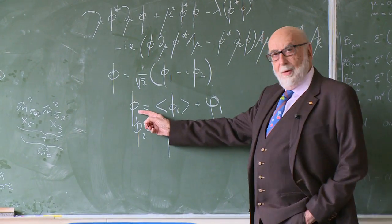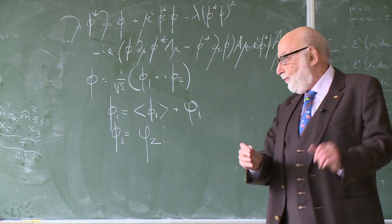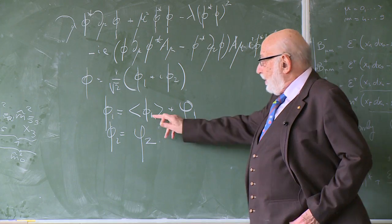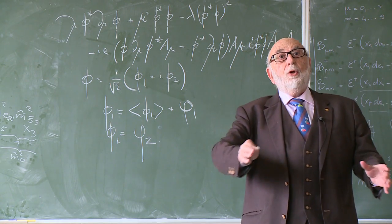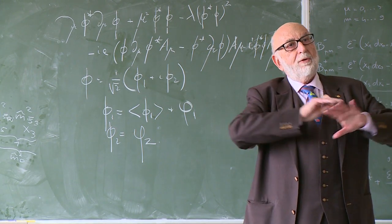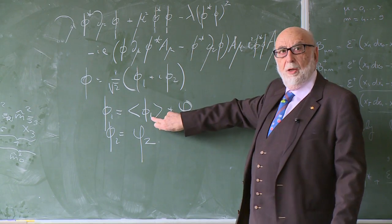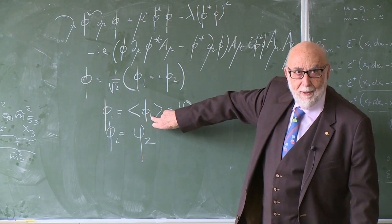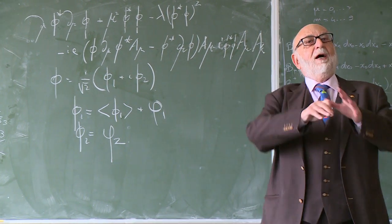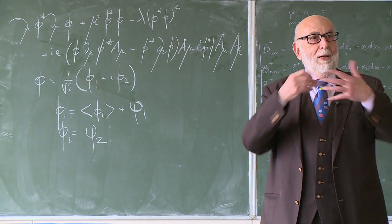We decomposed one of these fields. This field here is what's called a complex field. It means it's a collection of two fields, which can be called phi 1 and phi 2. And one of these fields give rise to a condensate that is spread out all over the universe. And it is the interactions between A mu and that condensate which gives the mass to the A mu field.